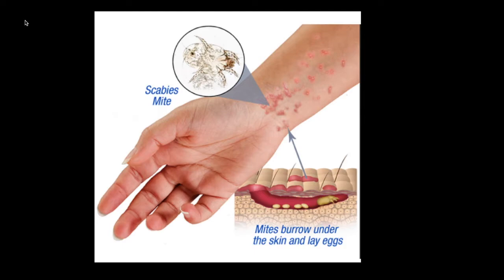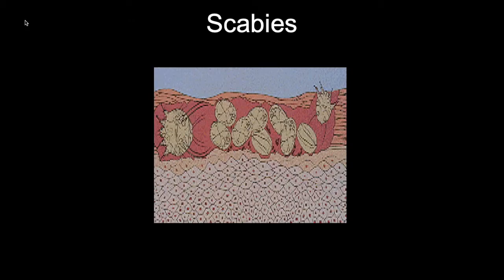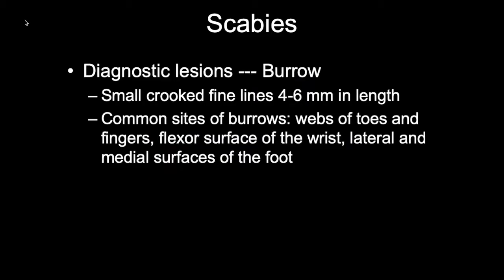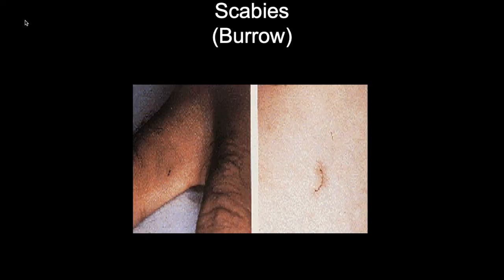The mite buries underneath the epidermis, where it stays and lays its eggs — this is called a burrow. The diagnostic lesion for scabies is the burrow, described as small, crooked, fine lines of about 4 to 6 millimeters in length. Common sites where you can find the burrow are the finger and toe webs, the flexor aspect of the wrist, and the lateral and medial aspect of the foot. Here is a photo of a burrow injected with ink for easy identification.